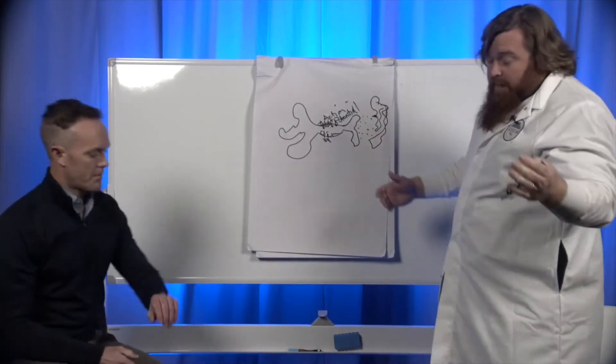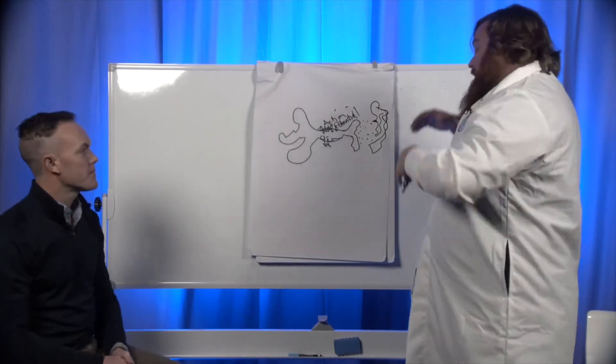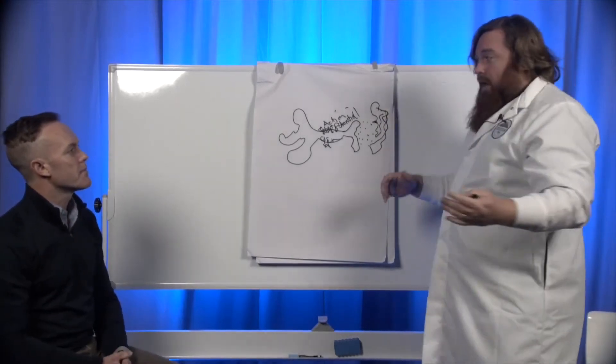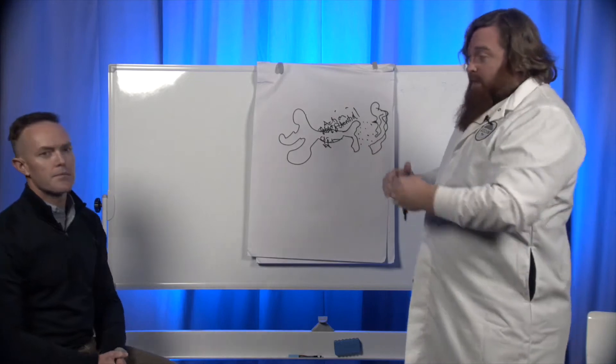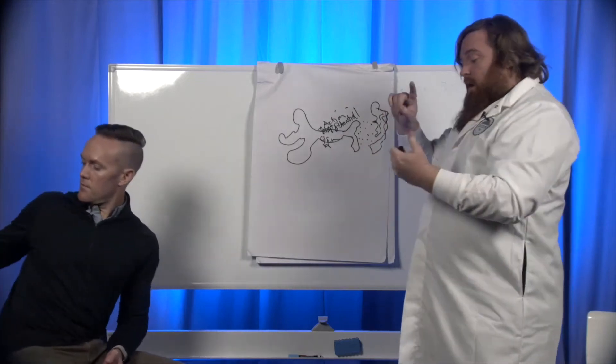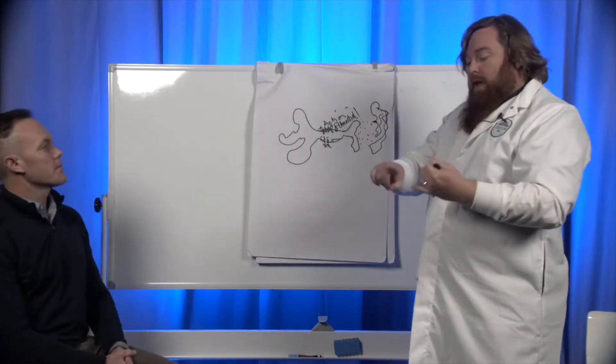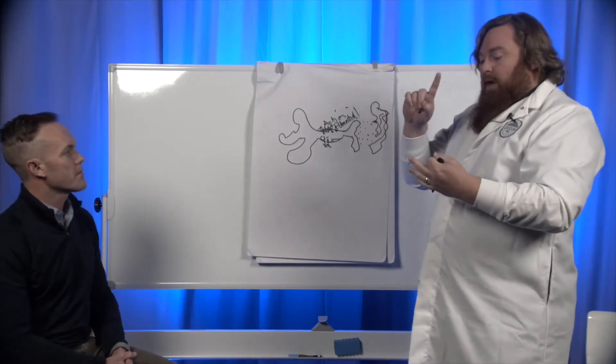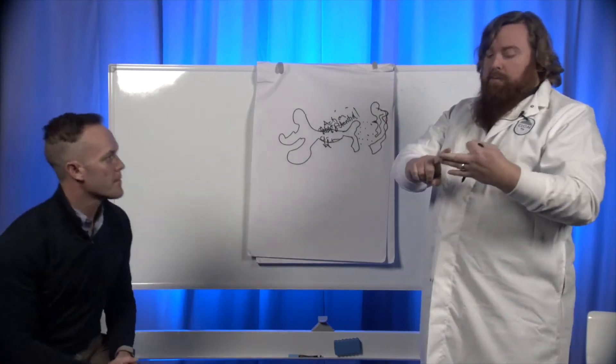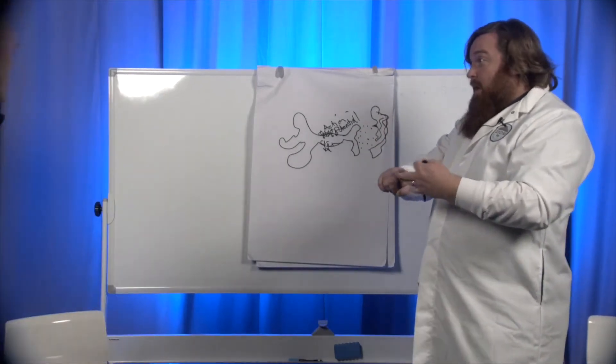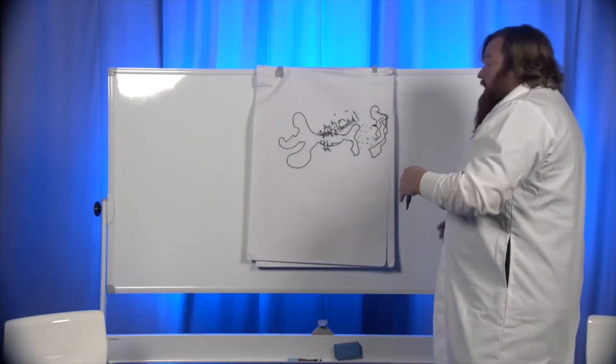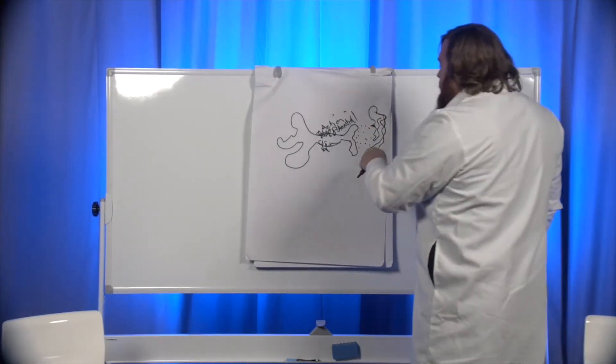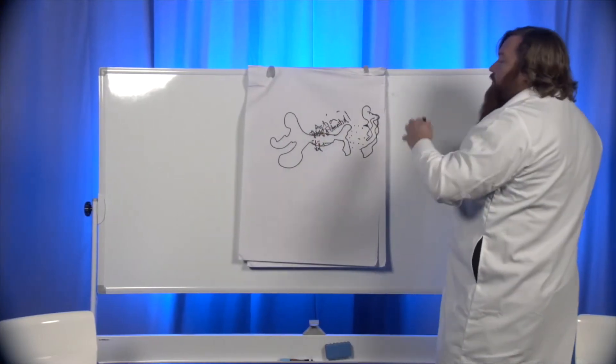So for example, you stub your toe and you get a pain signal. Pain signal then tells your body, oh no, something's happening. And your body sometimes overreacts. You end up starting to have adrenaline, epinephrine. You end up having a histamine response. Your body starts to ramp up its immune system, right? All of these different types of things.